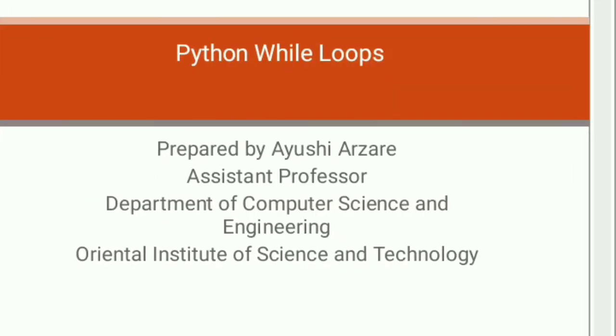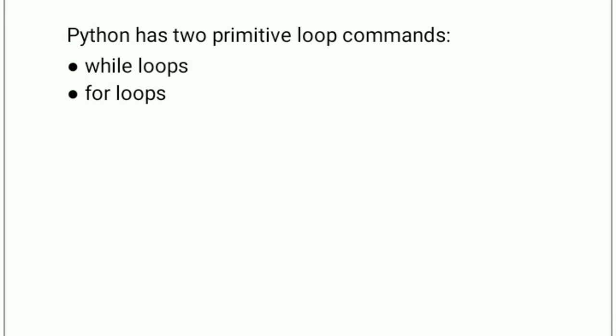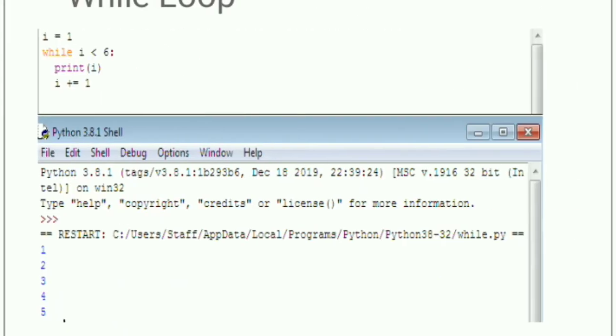So basically, Python has two primitive loop commands. First one is while loop and second one is for loop. We used while loop in previous languages. We will use it here too.